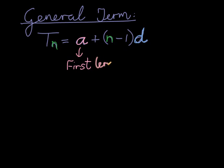So alpha term, that's why we're using a, the first term. And the first term can also be represented with t1. d we said is the constant difference.